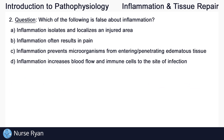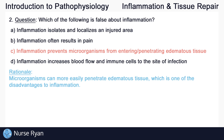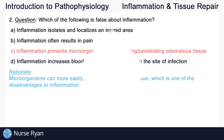Question number two: which of the following is false about inflammation? This one is C — inflammation prevents microorganisms from entering or penetrating edematous tissue. Microorganisms can more easily penetrate edematous tissue, which is one of the disadvantages to inflammation.